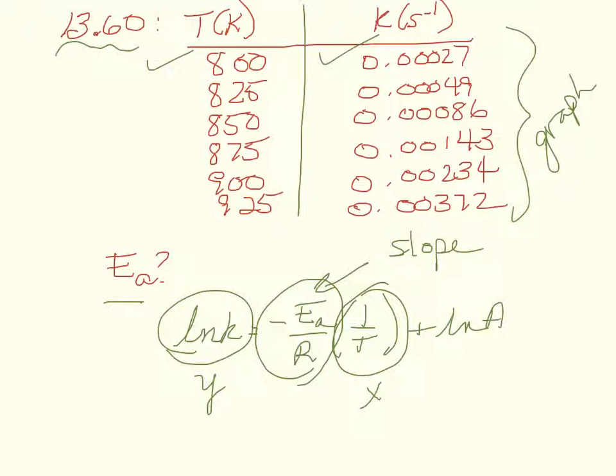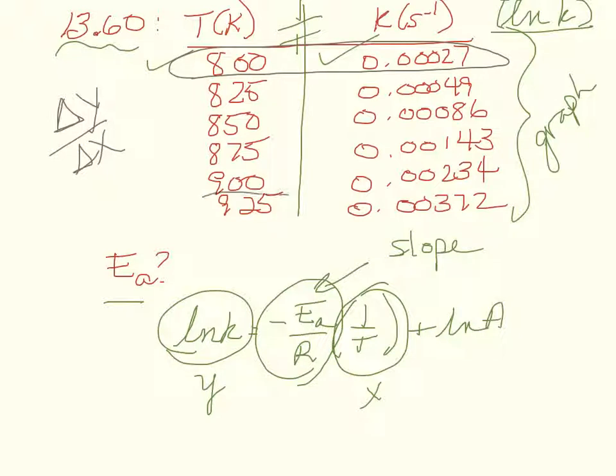In order to work this problem, you do need to find the natural log of K and you need to find 1 over T. But my kind of cheaty method is slope is the change in y over change in x. So I'm just going to pick two data points. I'm going to take the change in the y values over the change in the x values and use that as a slope.